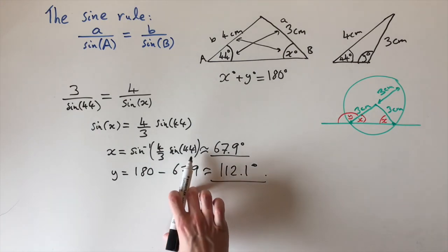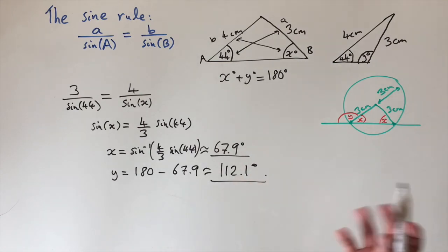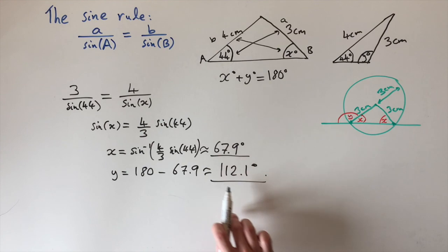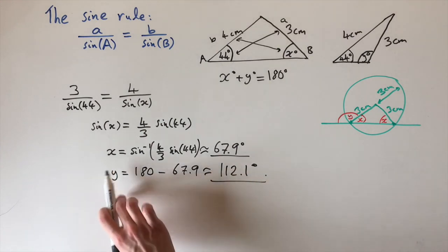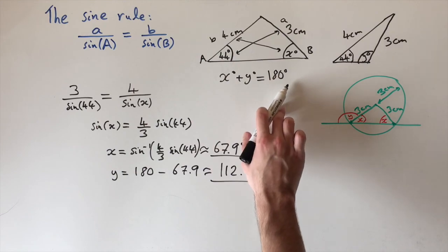So that's something to be aware of when you're using the sine rule: you can get an acute angle solution and an obtuse angle solution. In an exam, they'd usually specify which one they're after. But just remember, to get from one to the other, you use this relationship that the sum of these two angles equals 180 degrees.